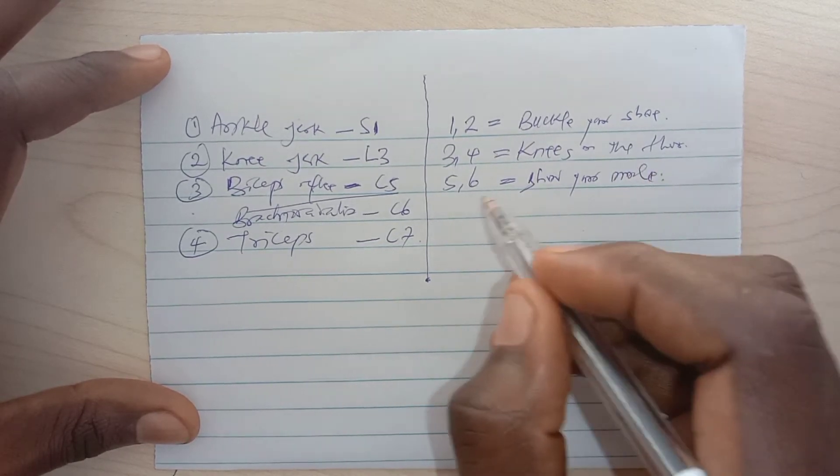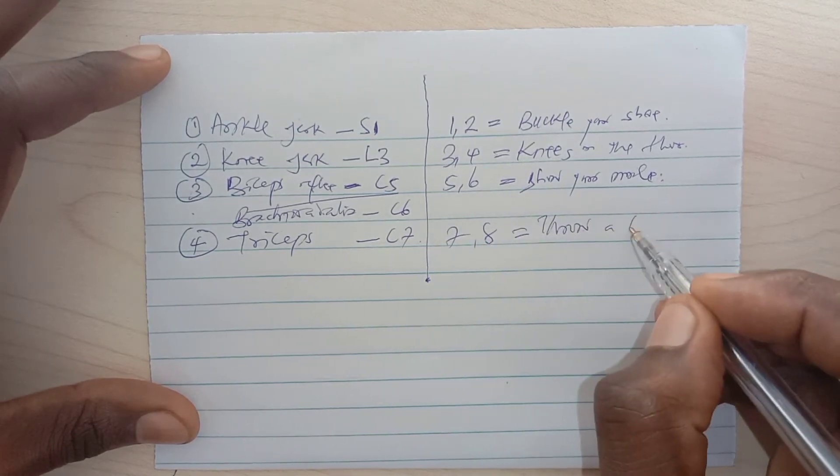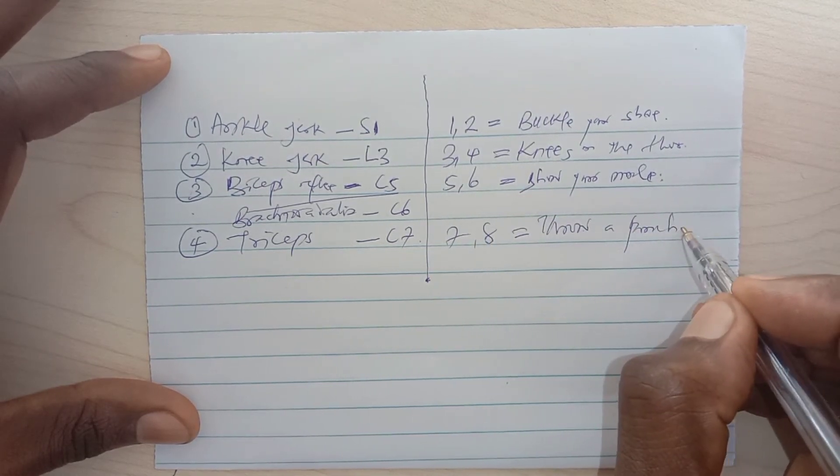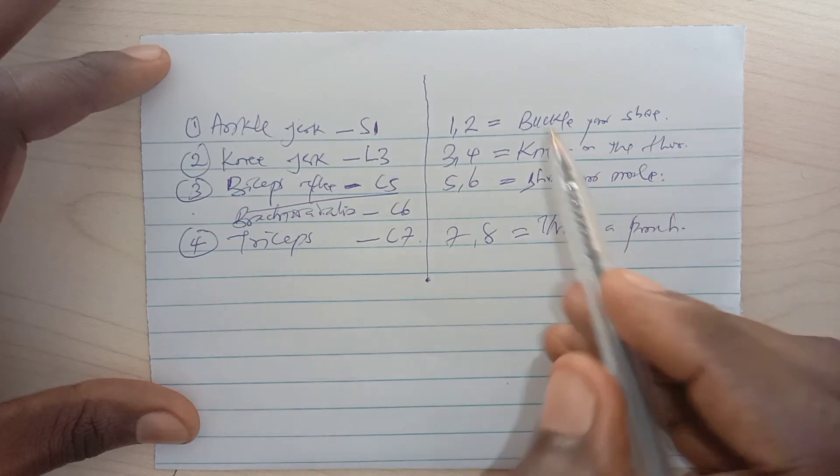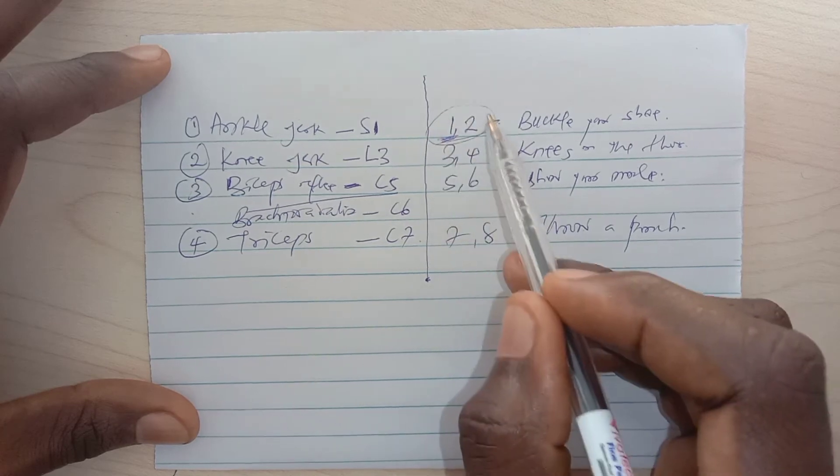And then seven-eight: you throw a punch. Alright, so ankle jerk is mainly S1 with S1-S2, that's correct.